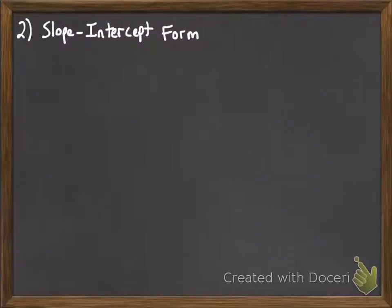Okay, we continue talking about slope by looking at the second way that we have to find slope, and that's by talking about what's called the slope-intercept form.